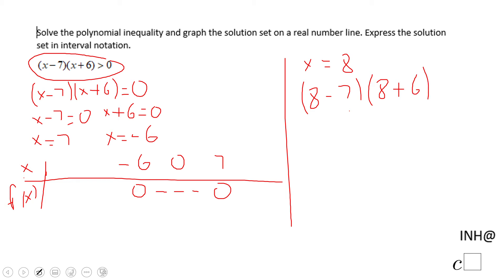So with the original inequality we're going to end up with eight minus seven and eight plus six. If you take a look at this product, eight minus seven is a positive number, is one. Eight plus six is a positive number, is positive fourteen. This is going to be a positive value, that's why I'm going to put here plus plus plus.